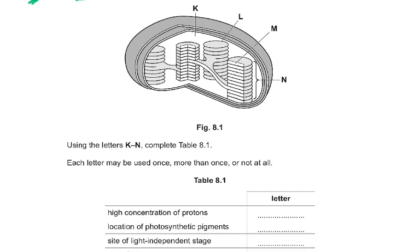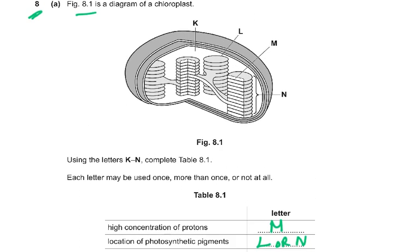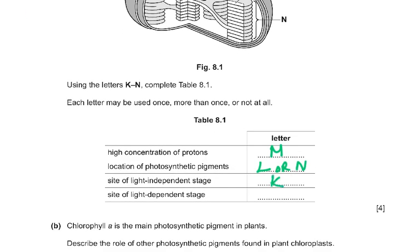Each letter may be used once, more than once, or not at all. The four items are: high concentrations of protons, location of photosynthetic pigment, site of light-independent stage, and site of light-dependent stage. High concentration of protons is going to be in M — that's the thylakoid space, where protons are pumped in and flow out through ATP synthase. Location of photosynthetic pigments is L or N. Site of the light-independent stage is K (the stroma). Site of the light-dependent stage is L or N. That gives you the four marks.